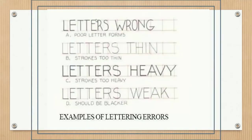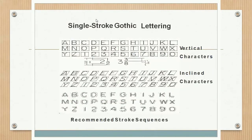These are the lettering errors — when you actually try it, you will find these errors in your drawing. Examples of single stroke Gothic lettering include vertical characters, inclined characters, and recommended stroke sequences.